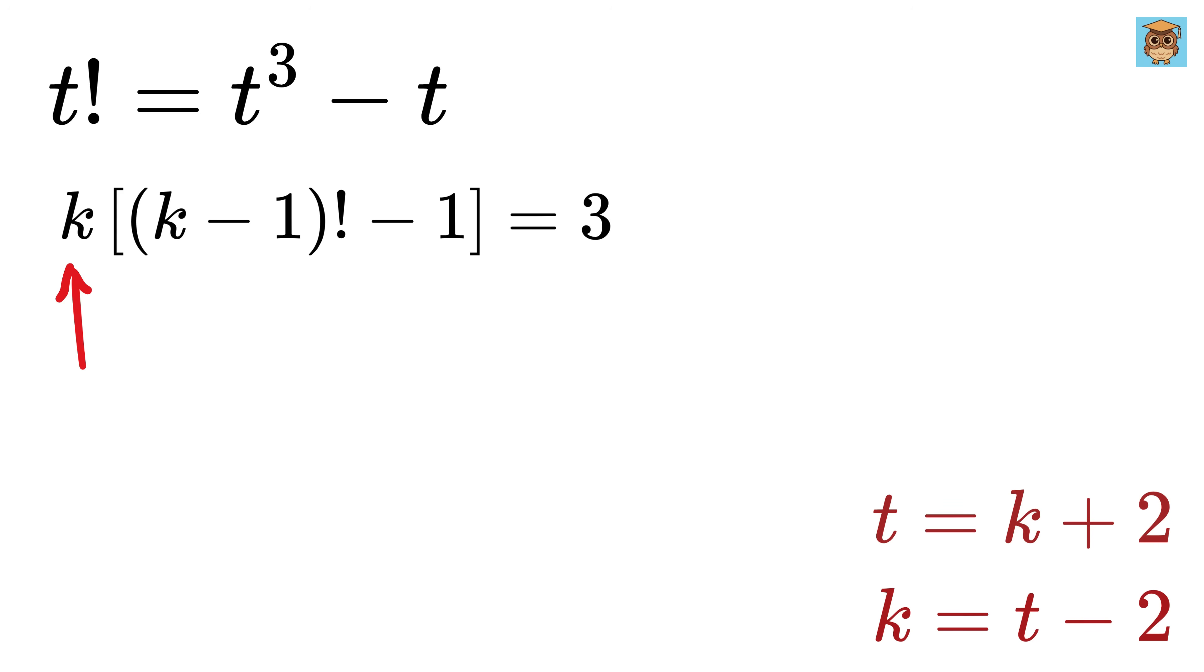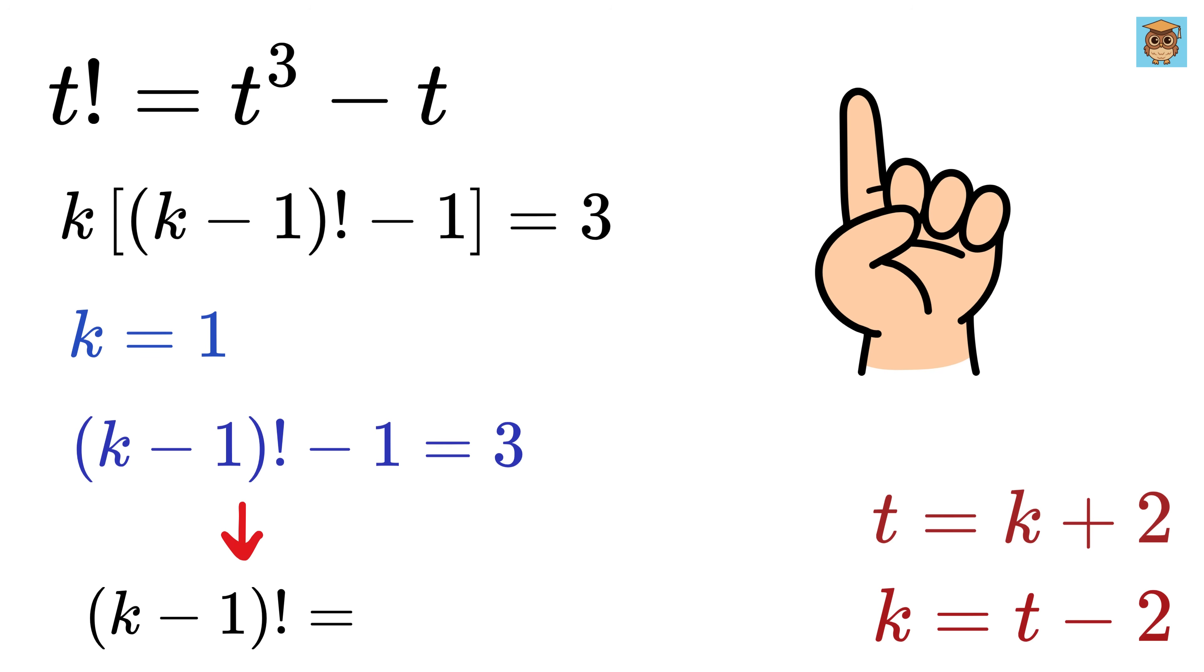Since k is integer, there are only two options to satisfy this equality. First is if k equals 1, and k minus 1 factorial minus 1 equals 3. This means k minus 1 factorial equals 4, which is not possible because if k is 1, then this will become 0 factorial, which is 1. Hence, 1 cannot be equal to 4. So we will discard it.